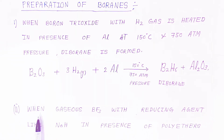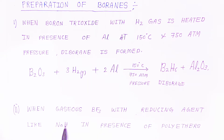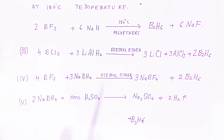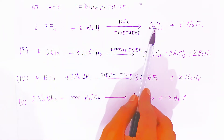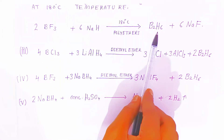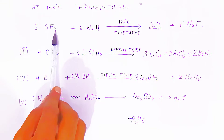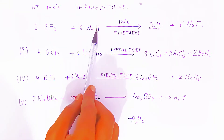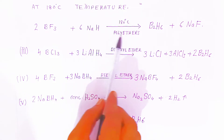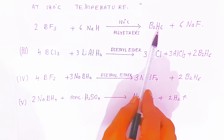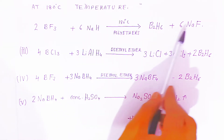The second preparation: when gaseous boron trifluoride reacts with a reducing agent like sodium hydride in the presence of polyether at 180 degree Celsius, it forms diborane. So boron trifluoride reacts with sodium hydride at 180°C in the presence of polyethers as a solvent, and you get diborane and sodium fluoride.